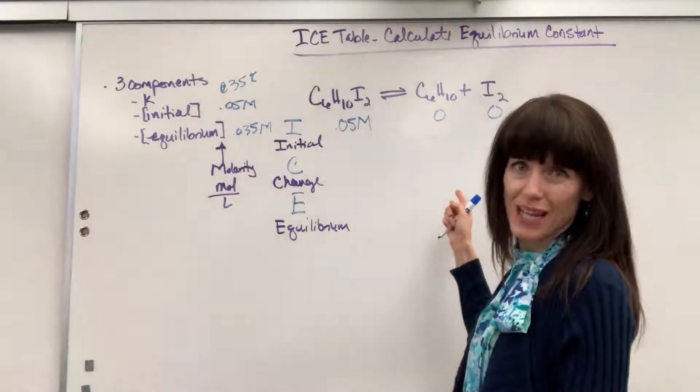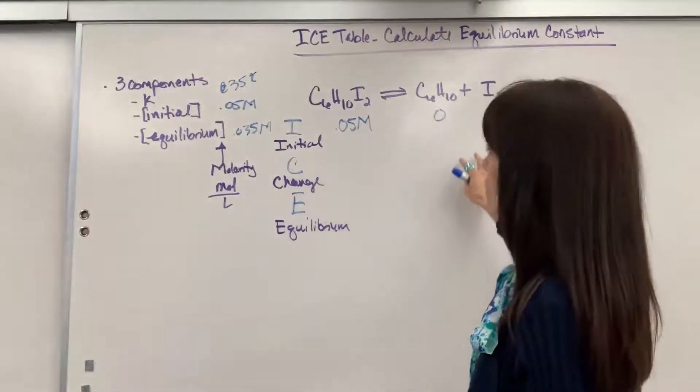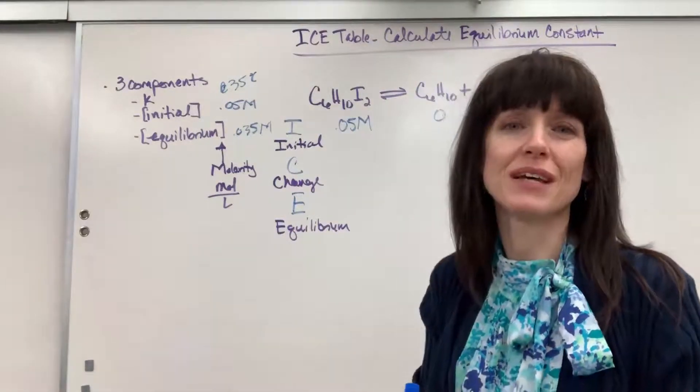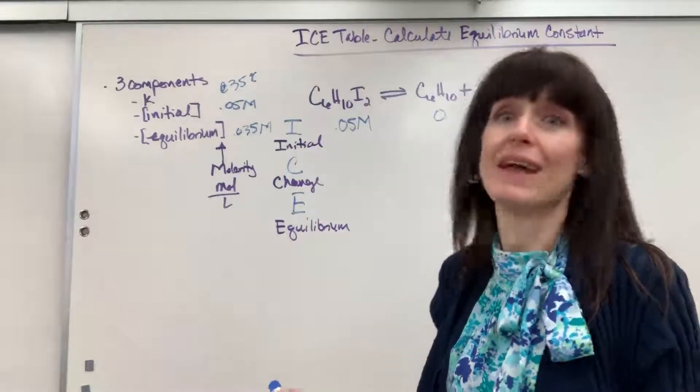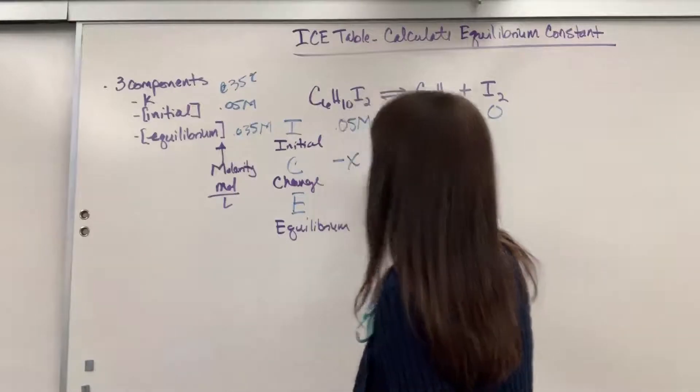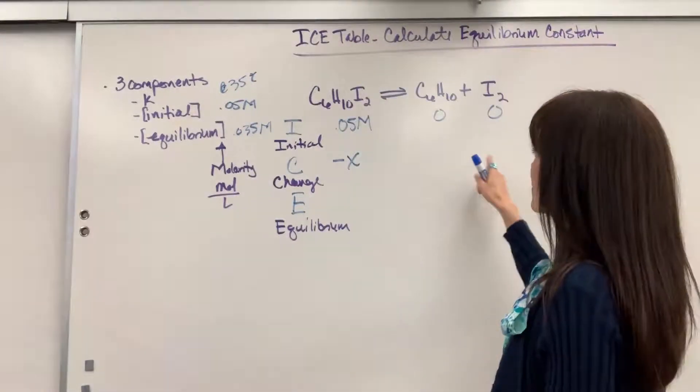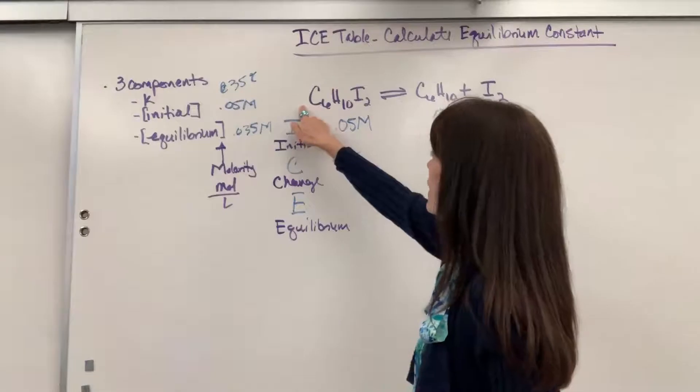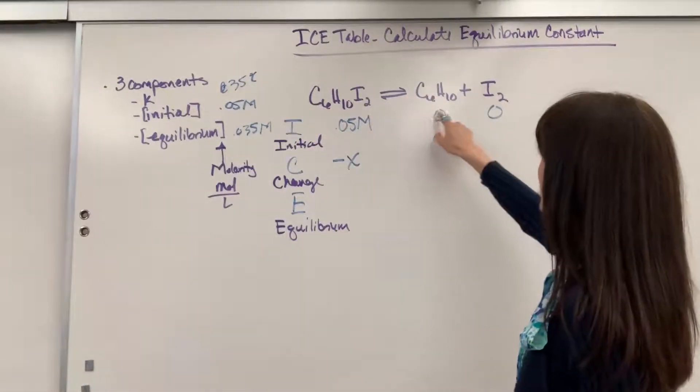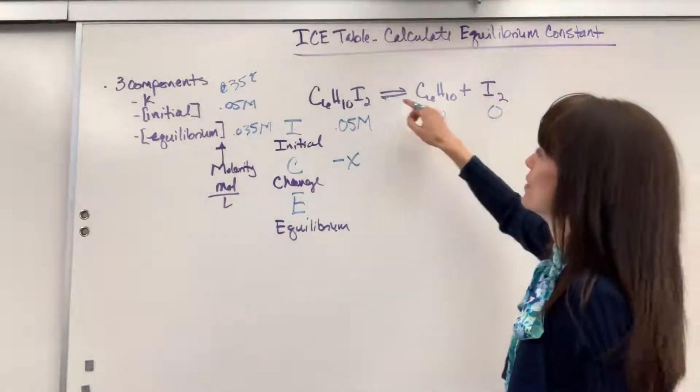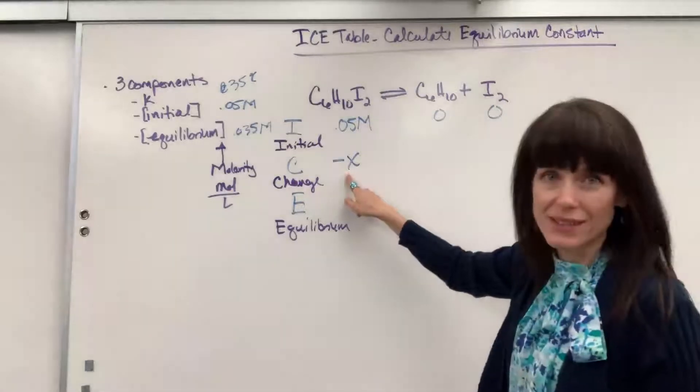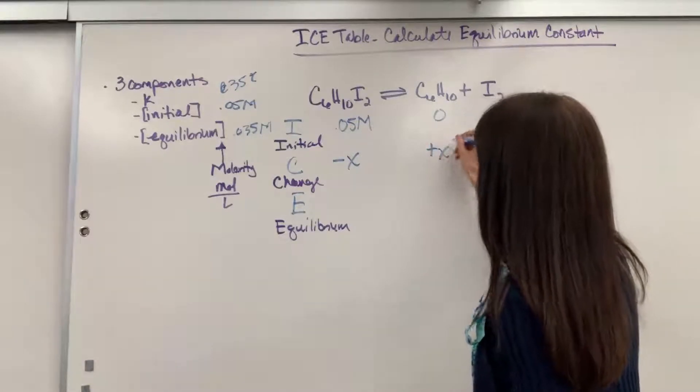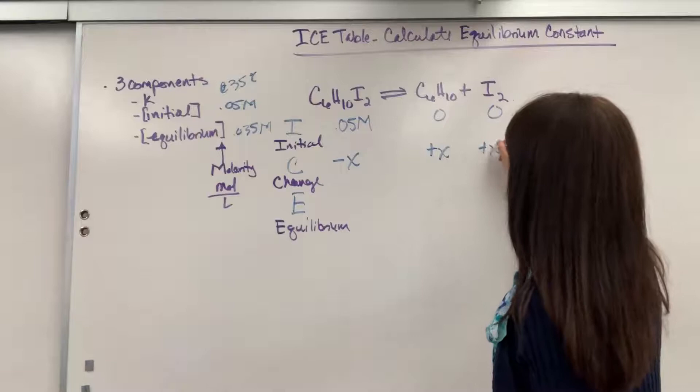Now the change, what's going to happen here? Some of those reactants are going to be consumed and they're going to produce the products. So the change, we don't know the amount that's going to be consumed. We're going to use it as a symbol of X. That's our unknown. So we're going to lose an amount of reactant and then we're going to gain the products. Now here, stoichiometry comes in. Let's look at our molar ratios. For every one mole that we lose of the reactant, we're going to gain one mole of the C6H10 and one mole of the I2.